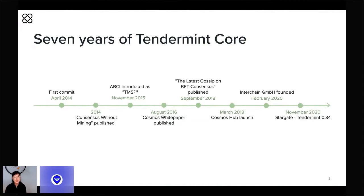In August 2016, the Cosmos white paper was published. If you're tuned in to Interchain Conversations today, you're probably pretty familiar with this white paper because it outlined the original vision for a Tendermint-powered internet of blockchains, or the interchain. The Cosmos Hub, which began to actually realize that vision, was launched three years later in 2019.